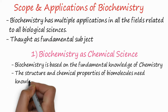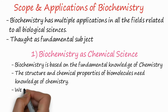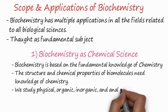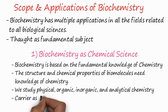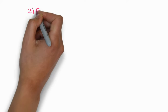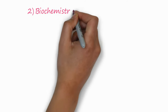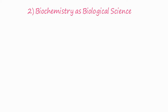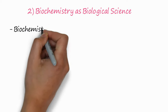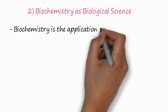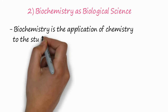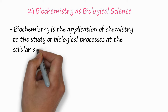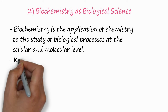Biomolecules require knowledge of chemistry, so we study physical chemistry, organic chemistry, inorganic chemistry, and analytical chemistry in the curriculum of biochemistry. When you have the knowledge of biochemistry, you can work as a chemist too. The second scope is biochemistry as a biological science — it is the application of chemistry to the study of biological processes at the cellular and molecular level.